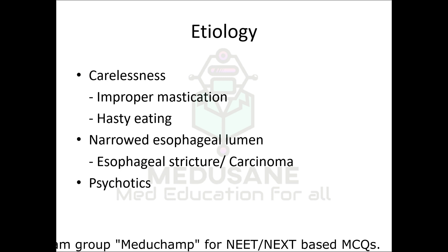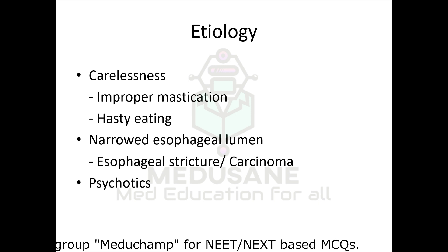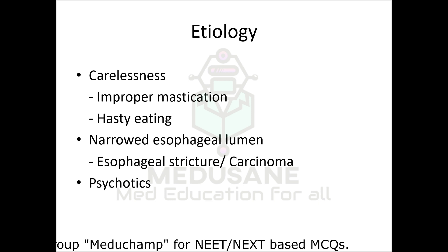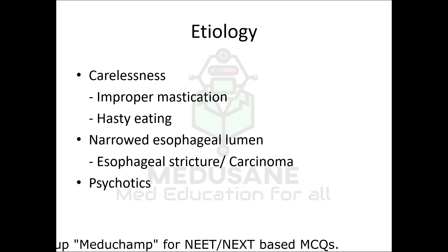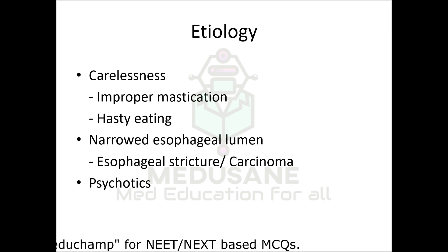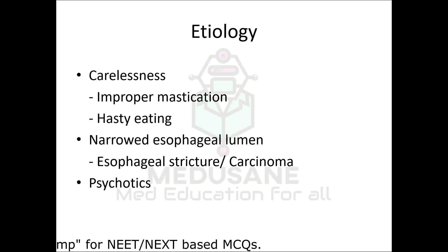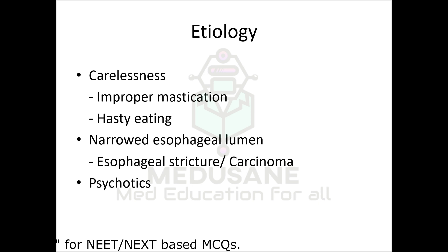Sometimes due to carelessness a foreign body can get stuck in the upper GIT — because of improper mastication or hasty eating when a large bolus of food is suddenly taken. It can also occur if there is a narrowed esophageal lumen due to benign causes such as post-acid-poisoning stricture, or malignant causes such as carcinoma of the esophagus, where the foreign body gets stuck just proximal to the narrowing. Sometimes it is also seen in patients with suicidal tendencies or psychotics who deliberately ingest objects.